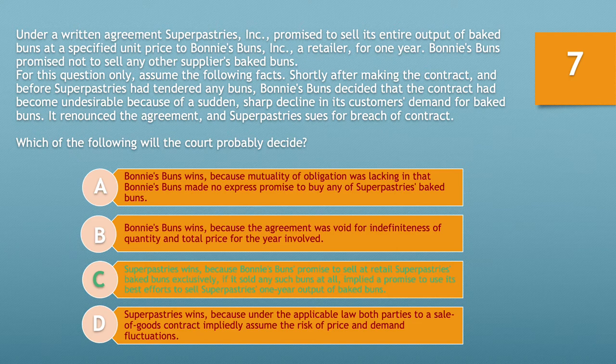In this case, Super Pastries, Inc. promised to sell its entire output of baked buns to Bonnie's Buns, Inc. for one year, and Bonnie's Buns promised not to sell any other supplier's baked buns. This is a valid output contract. Therefore, Super Pastries will win because an output contract implies a good faith effort to sell the items being purchased.